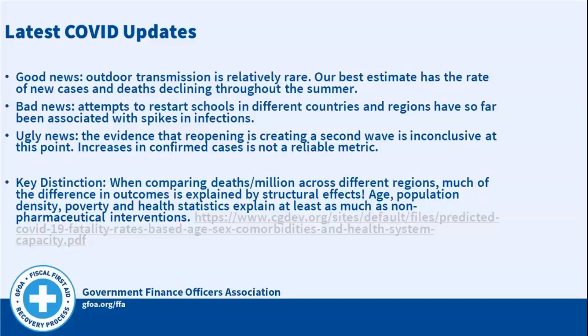When comparing deaths per million across different regions on an apples-to-apples basis, considering different degrees of lockdown and how they influence outcomes, much of the difference is actually explained by structural effects — things like age, which is the largest determinant of outcome, as well as population density, poverty statistics, and health statistics. These explain at least as much as non-pharmaceutical interventions in a statistical regression trying to predict deaths per million across different regions. I'll now pass it off to Rick Mattoon, senior economist for the Chicago Federal Reserve.